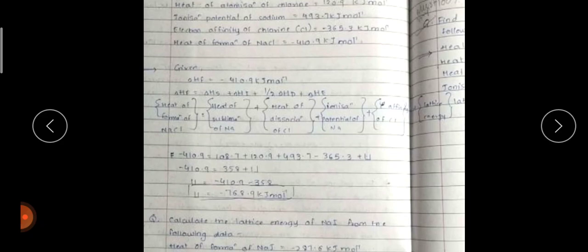Delta HF is equal to delta HS plus delta HI plus delta HD plus delta HE plus lattice energy delta U, or simply U. Here U is not written but you have to write the U. Then substitute all the values in this formula and you can directly calculate U.